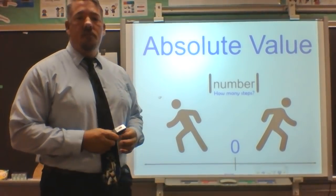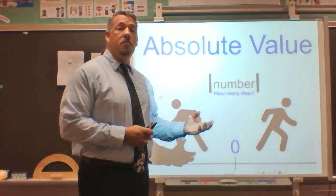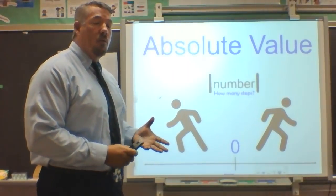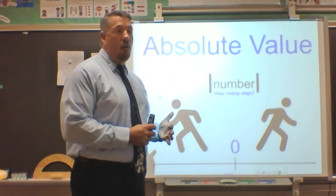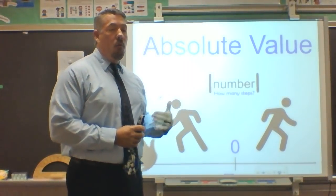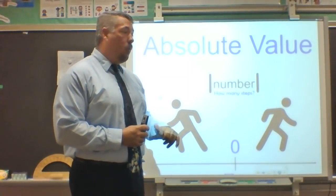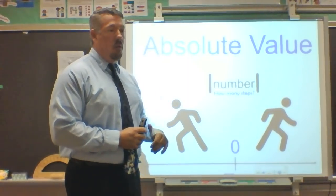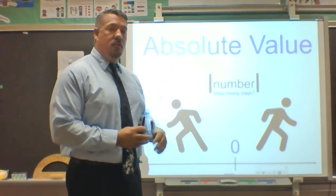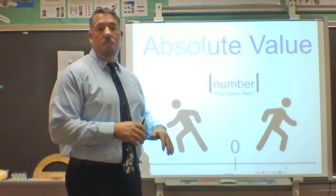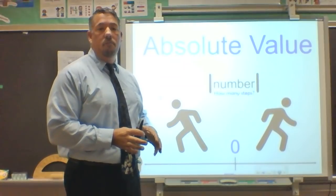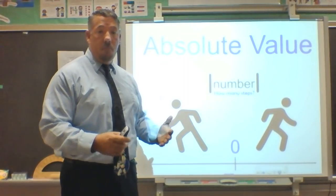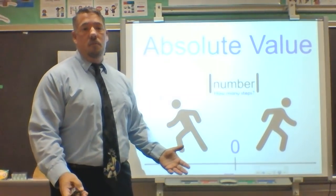So in Chapter 3, Lesson 5, we're talking about absolute value. We said that absolute value is how many steps do I take forward or backward on a number line, or up or down on a vertical number line. It doesn't matter if it's positive or negative — I know I'm taking that many steps, so it's always going to be shown as a positive number.